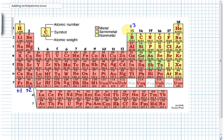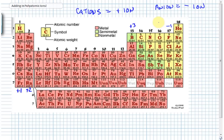Our potential anions — anion means a negative ion — come from column 17 with a minus 1 charge, column 16 with a minus 2 charge, and column 15 with a minus 3 charge. Those are simple basic binary compounds. We're not concerning ourselves with the transition metals at this point — they're a bit more complicated.